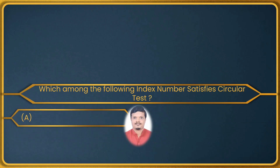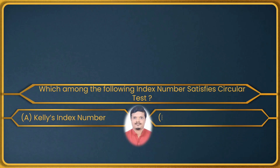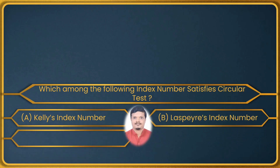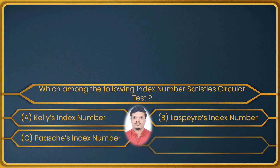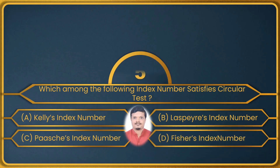Next question: which among the following index numbers satisfies the circular test? The options are: Kelley's index number, Laspeyre's index number, Paasche's index number, and Fisher's index number.